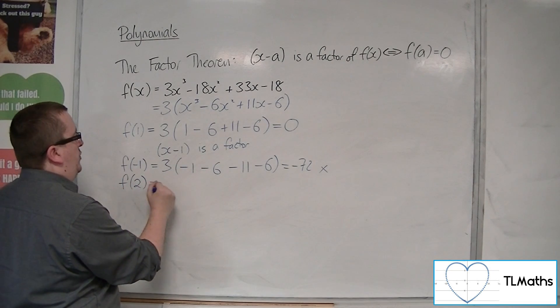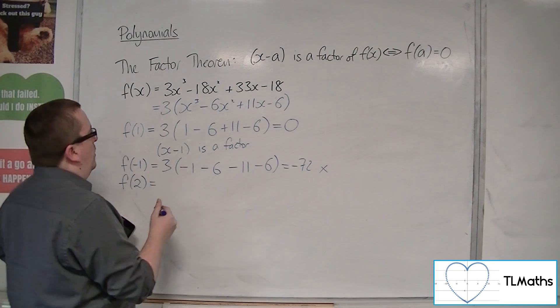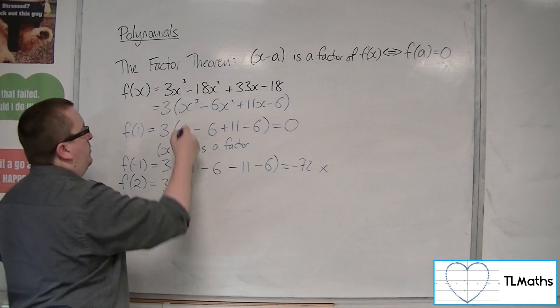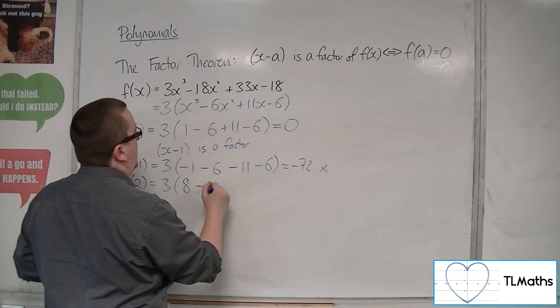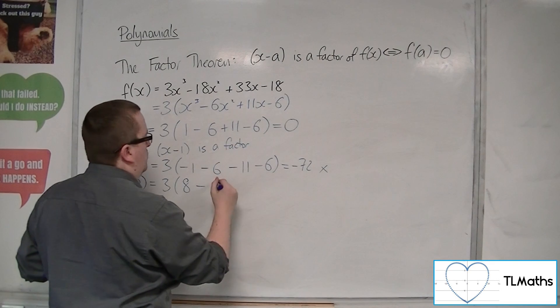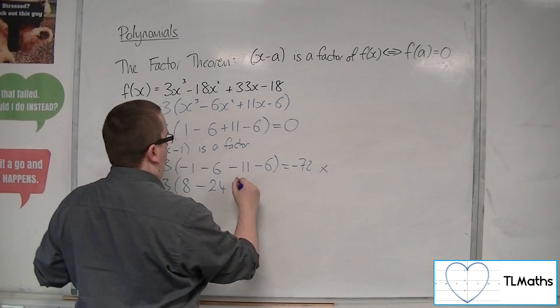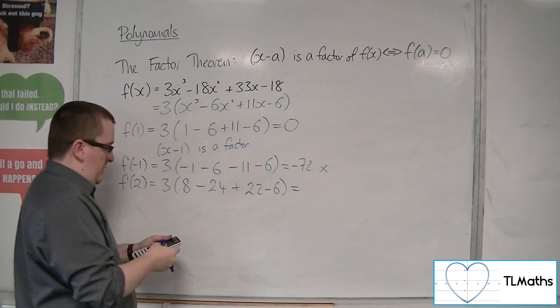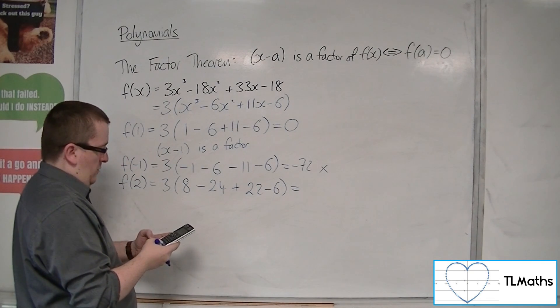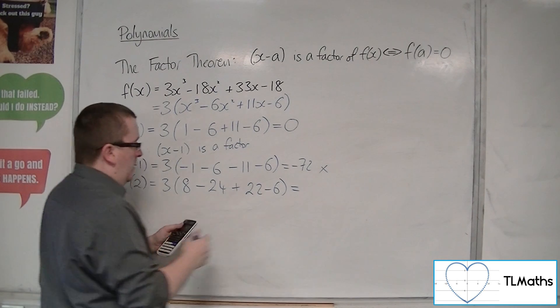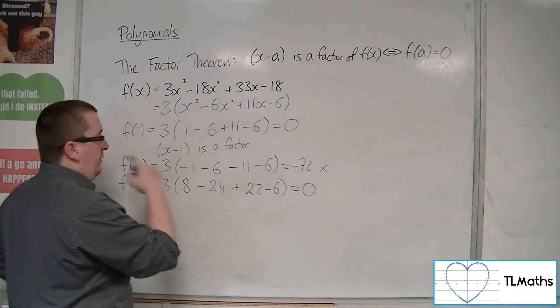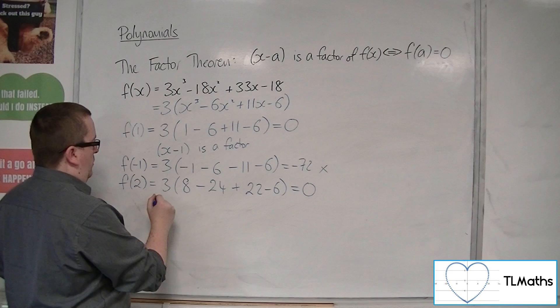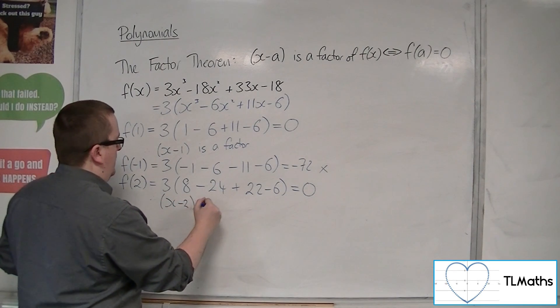So next one, I'll try f of 2. So f of 2, we'd have 3 lots of 2 cubed, so 8, take away 6 lots of 4, so 24, plus 22, take away 6. So we've got 8, take away 24, plus 22, take away 6. Oh, that's 0. OK, so 3 lots of 0 is 0. So therefore, x minus 2 is a factor.